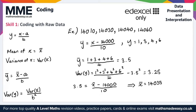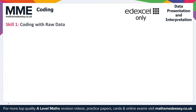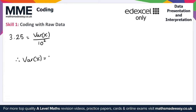Now for the variance of the original values: 3.25 equals Var(x) over b squared, which is 10 squared, or 100. Solving for Var(x) gives 3.25 times 100, which equals 325. So the mean of our four numbers is 14,035 and the variance is 325. That gives us everything for Skill 1 on coding with raw data.